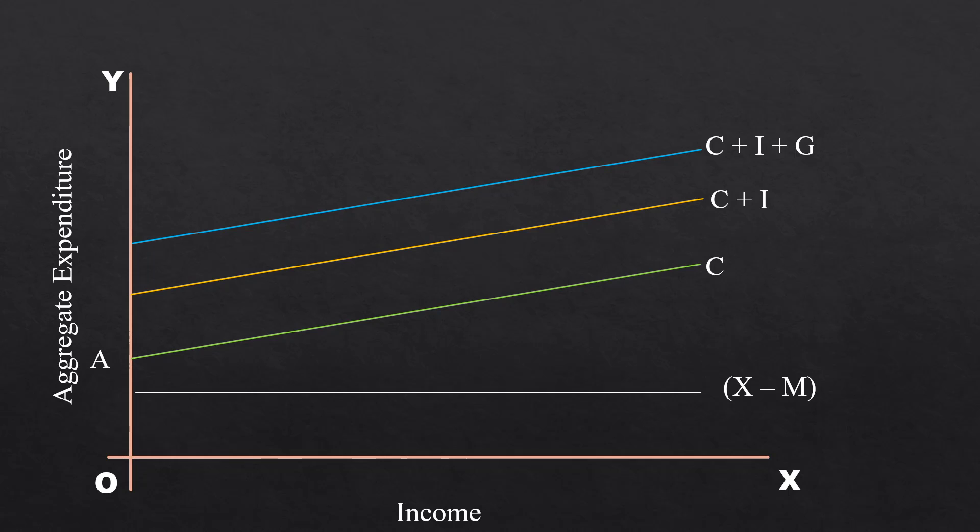This expenditure is also independent of income. For the sake of analytical simplicity, we assume a fixed net export amount is spent by the community in the economy. Hence, this curve is also parallel to x-axis. By vertically adding Net export expenditure to C plus I plus G curve, we get the curve C plus I plus G plus X minus M. It is the aggregate demand curve of the four sector model.